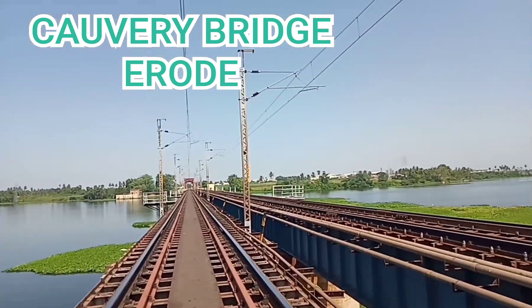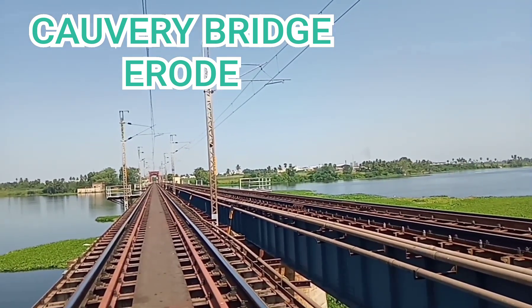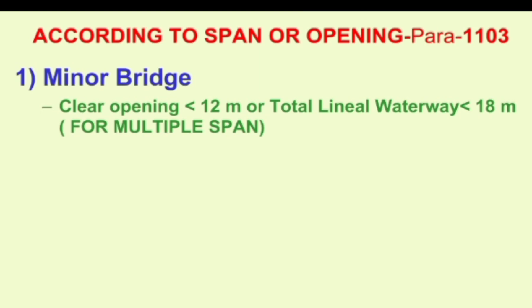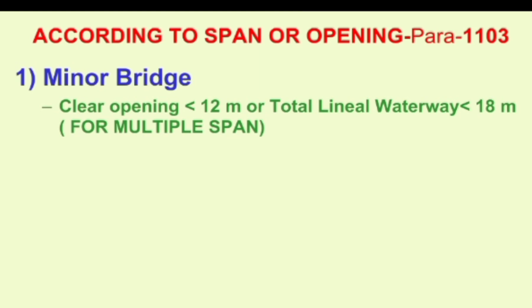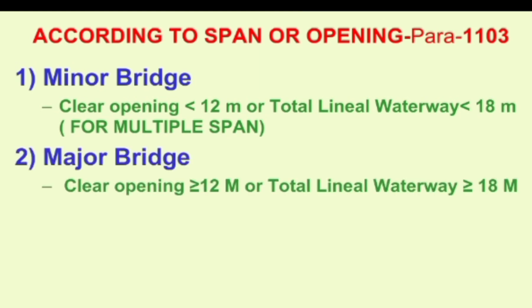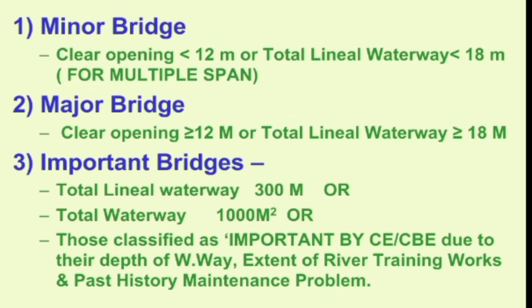This is one of the important bridges in Southern Railway. First we can see the basic types of bridges according to span or opening as per Indian Railway's bridge manual. When clear opening is less than 12m or total linear waterways less than 18m, bridges are called minor bridges. Where clear opening is more than or equal to 12m or linear waterways more than or equal to 18m, they are called major bridges. Linear waterways more than or equal to 300m or total waterways more than 1000 square meters are called important bridges.